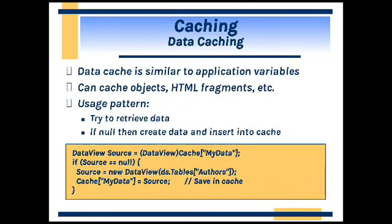A fragment of HTML content can be held as cached data. Here we can see the example. 'MyData' is our cache — we are creating it as a source. If it is null, we can create it by inserting data which is available in the table 'authors'. So we are creating our own cache using the content of the table 'authors', placing that source into the cache 'MyData'. So now we have created a cache.